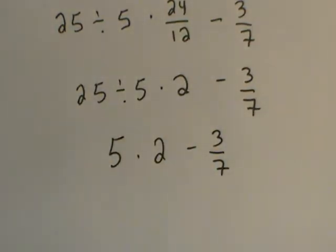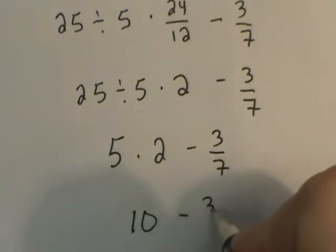5 times 2, of course, is 10. And we have our 10 minus 3 sevenths.